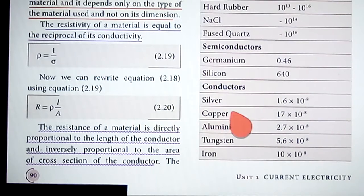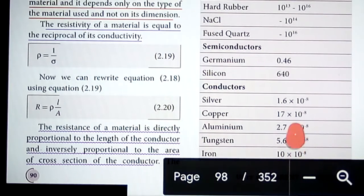For conductors, you see silver is 1.6 times 10 power minus 8 ohm meter, copper is 1.7 times 10 power minus 8, aluminum is 2.7 times 10 power minus 8, tungsten is 5.6 times 10 power minus 8, and iron is 10 times 10 power minus 8 ohm meter.